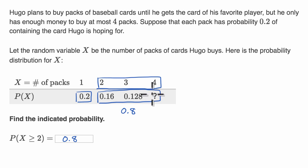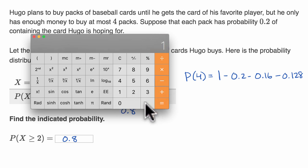If for kicks we wanted to figure out this question mark, we could say the probability of exactly four is going to be equal to one minus 0.2 minus 0.16 minus 0.128. One minus 0.2 minus 0.16 minus 0.128 is equal to 0.512.